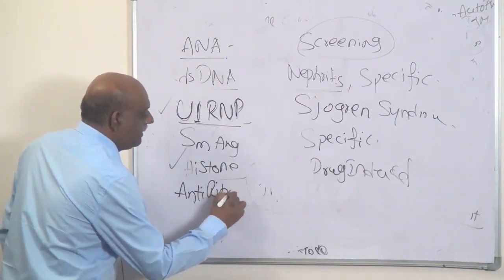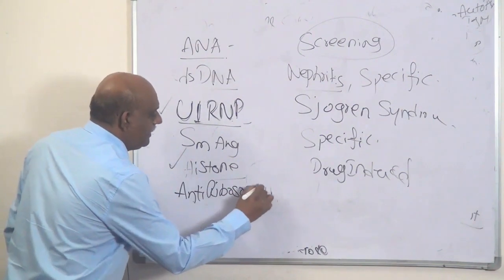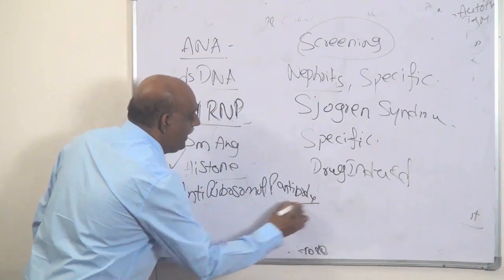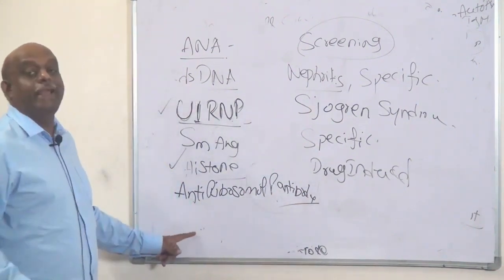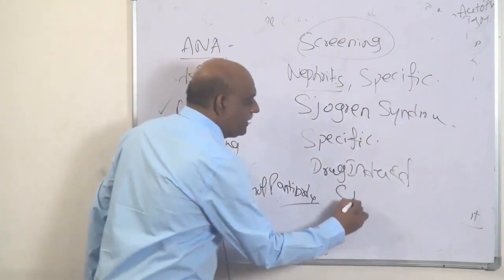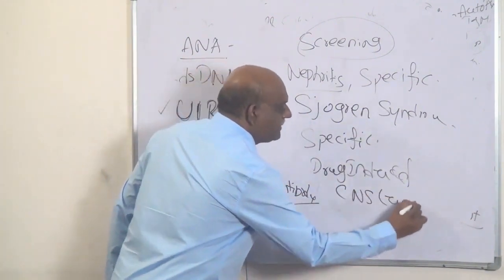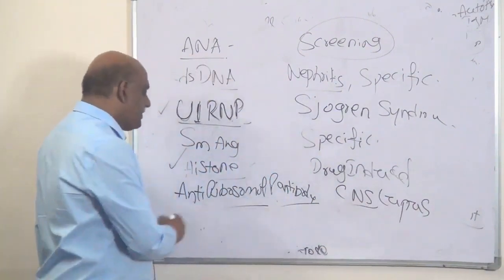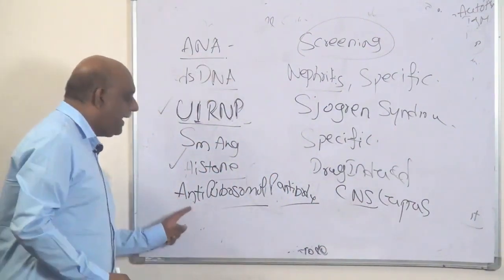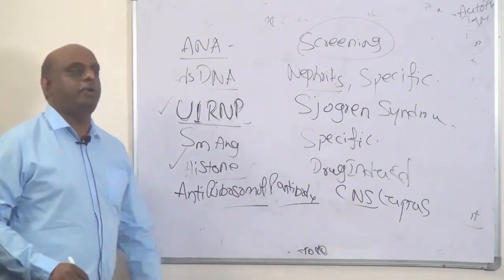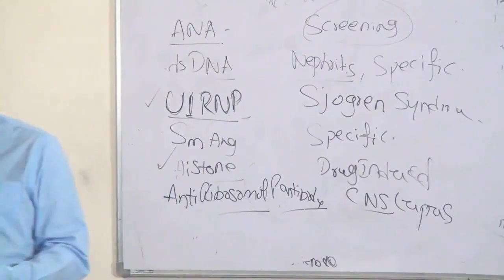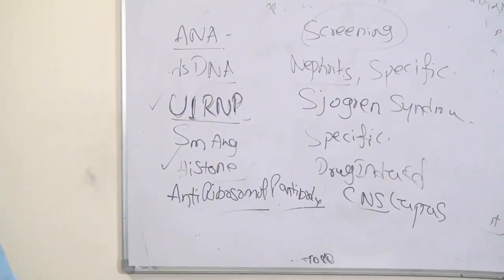Anti-ribosomal P antibody — in which condition is it seen? When lupus involves the brain, it is called CNS lupus. In CNS lupus, anti-ribosomal P antibody is found. This question is likely to come in tomorrow's DNB exam. That is what you have to be very, very sure about.